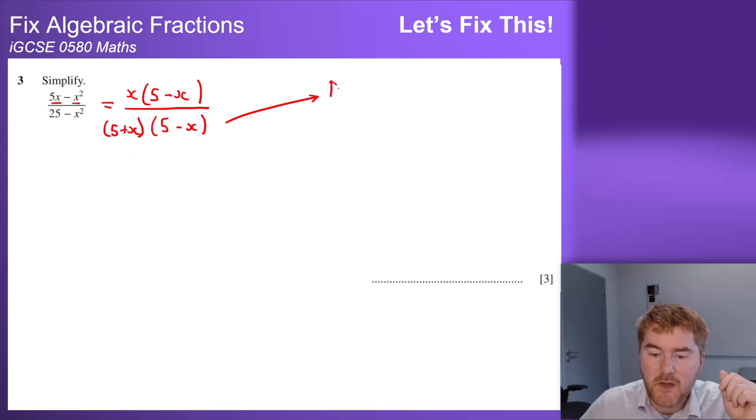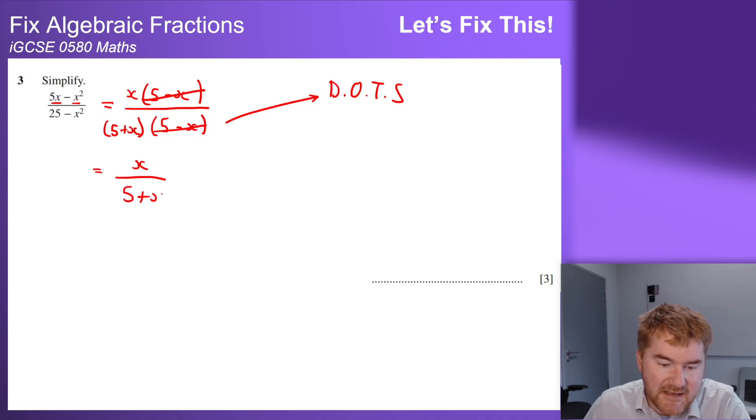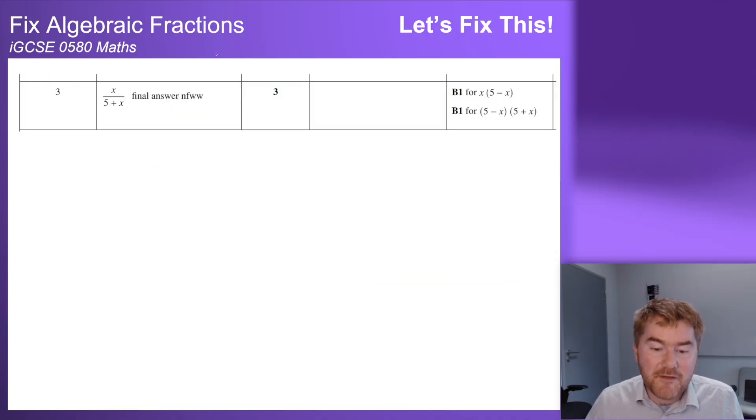And in fact this is also another example of difference of two squares, so sometimes there's more than one way of actually working out this problem. Then we can cancel through here because it's the same top and bottom, and that gives us x over 5 plus x. Again, like I said before, let's be nice to the examiner and pop it over there so they can give you all three marks without having to do too much work, which is always good for an examiner. So there's our answer, we've now got our three marks for that question.